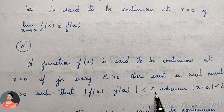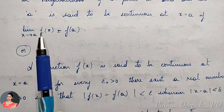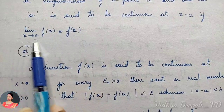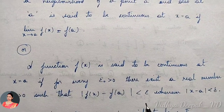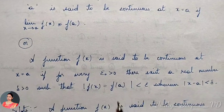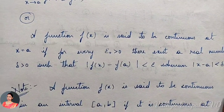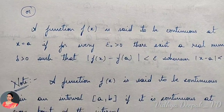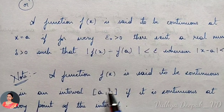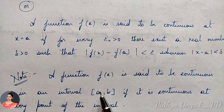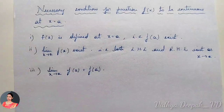...mod of f(x) minus f(a) is less than epsilon, whenever mod of x minus a is less than delta. So a function is continuous with either the limit definition or the epsilon-delta definition. A function f(x) is said to be continuous in a closed interval [a, b] if it is continuous at every point of that interval.